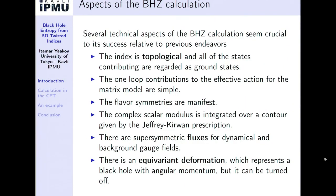Here are some of the technical aspects that went into this calculation and that I think made it successful relative to previous calculations involving the untwisted superconformal index. First of all, the index they computed is topological — all states supported on the two-sphere are ground states. The one-loop contributions are simpler, and the flavor symmetries in ABJM are manifest. There is a complex scalar modulus related to a scalar in the vector multiplet and the holonomy around the S1.